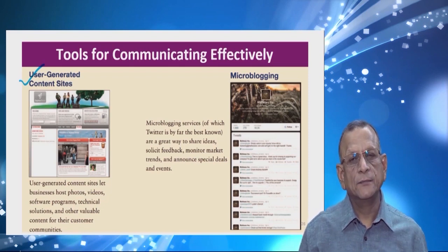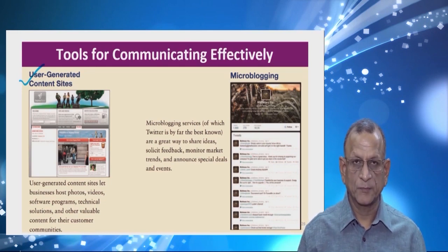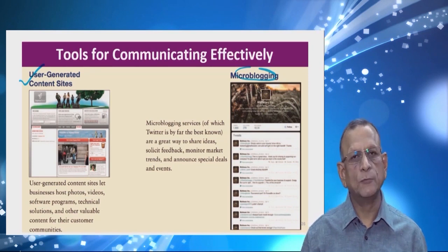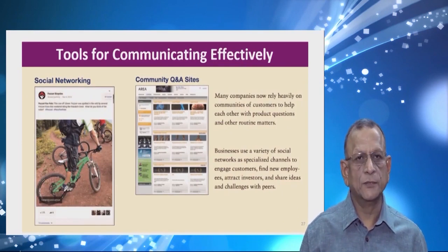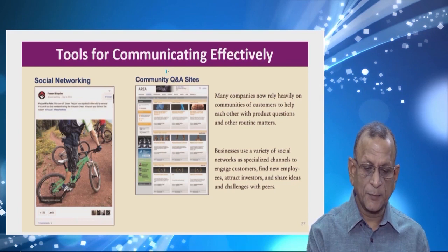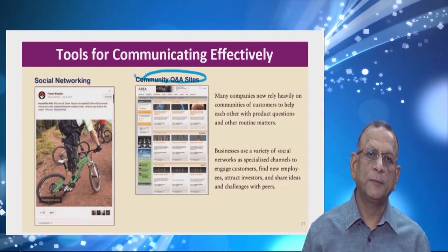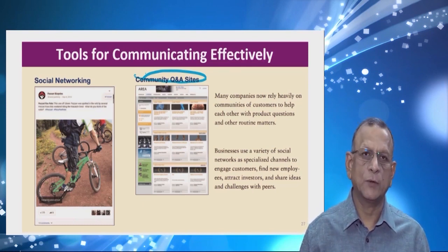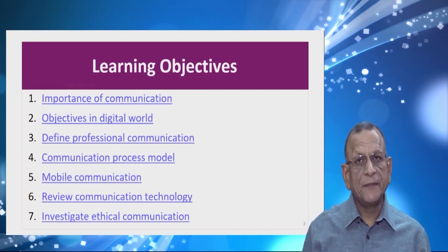We have another part known as user-generated content sites — Facebook is one of them, where any user can keep on adding information. Quora is also an example of user-generated content. Micro-blogging means updating with small messages on the blogs — this is known as micro-blogging. Social networking we have already understood, like Facebook and Pinterest. Quora is also a community question-and-answer site where you upload a question, many people answer, and all questions and answers are available in one place.